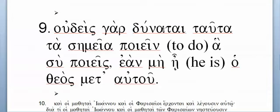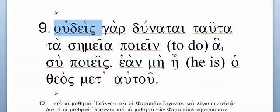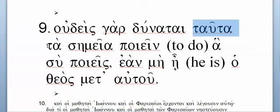So 'for no one is able' — that's your main clause. Then you have tauta ta semeia. If you know tauta, you've got a neuter plural. It lines up here and here, so this is a phrase meaning 'these signs' — plural. But then you have to say: is it nominative or accusative? Well, you already have a subject, and the verb is a singular verb, so it cannot line up with tauta ta semeia.